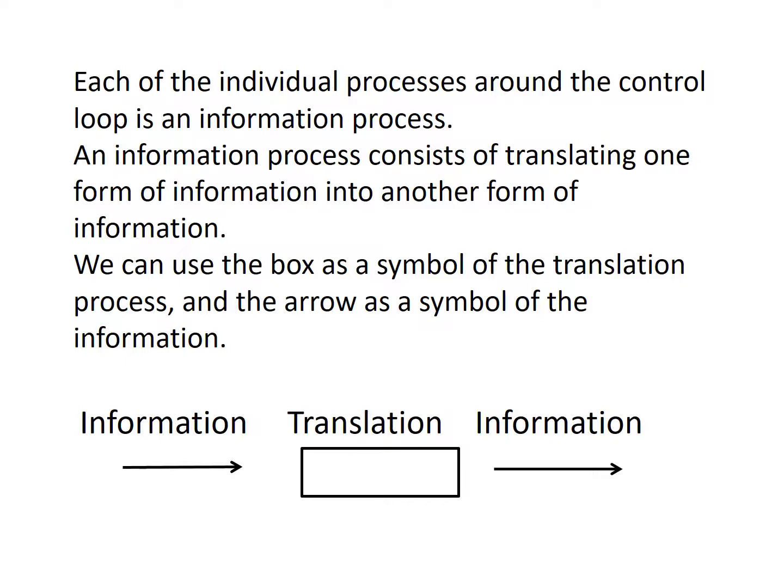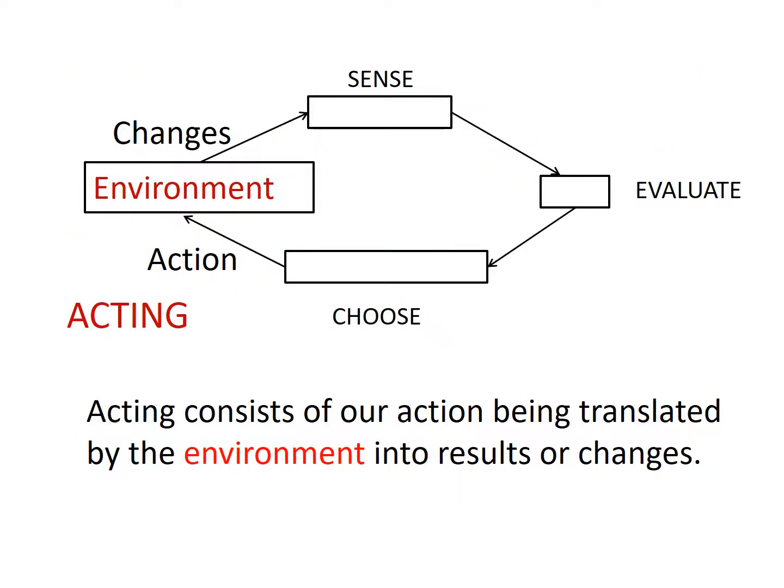Each of the individual processes around the control loop is an information process. An information process consists of translating one form of information into another form of information. We can use a box as a symbol of the translation process and the arrow as a symbol of the information — thus, information in one form is translated into information in another form.